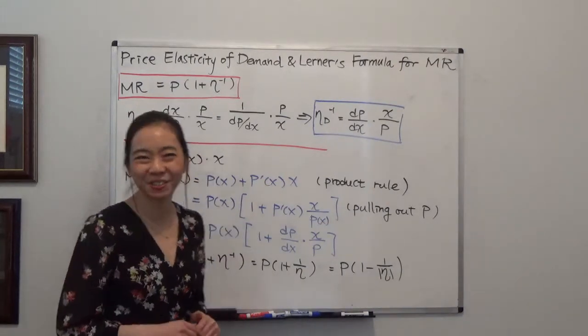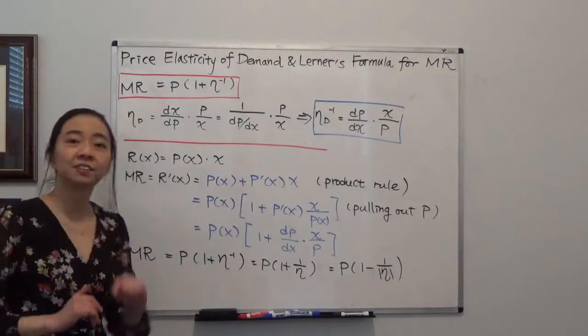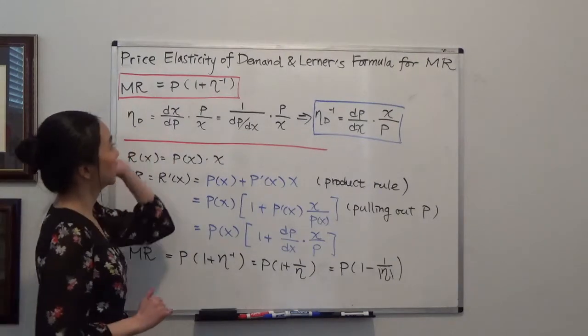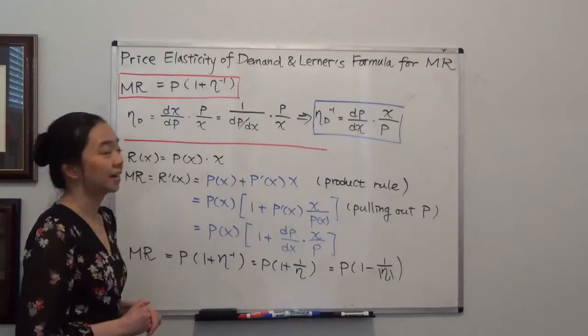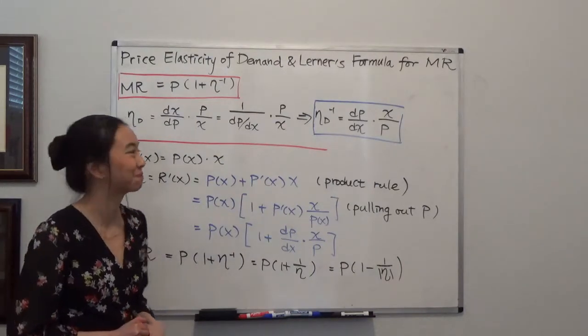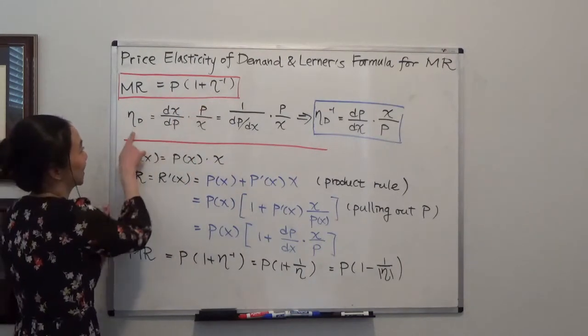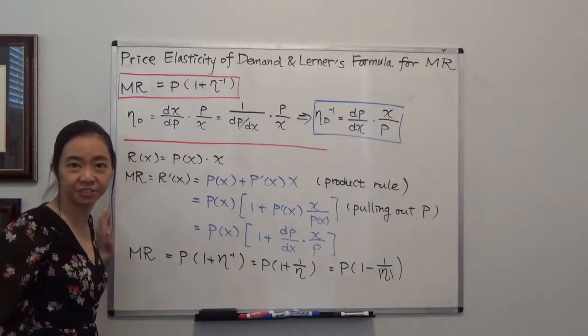So the bottom line is this: marginal revenue is equal to price times 1 plus the reciprocal of our price elasticity of demand. So eta here is our price elasticity of demand.